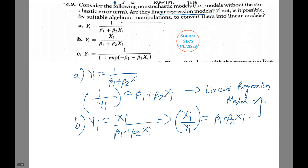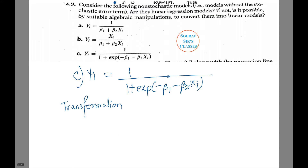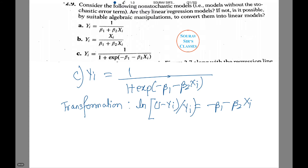Now number (c): yi equals 1 divided by (1 plus exp(minus beta1 minus beta2 Xi)). Applying a logit transformation as shown earlier, (1 minus yi) divided by yi equals minus beta1 minus beta2 Xi, and that makes it a linear regression model. Thus the original models are interestingly linear models.